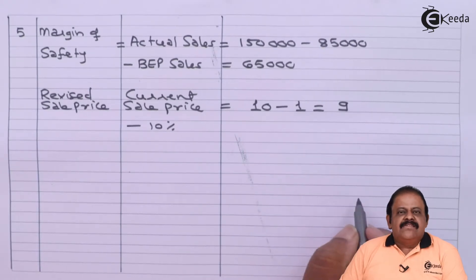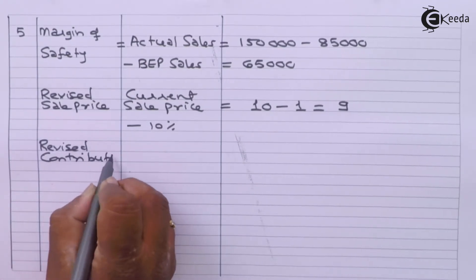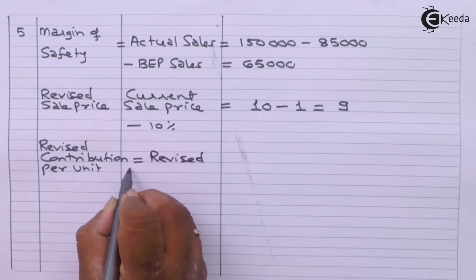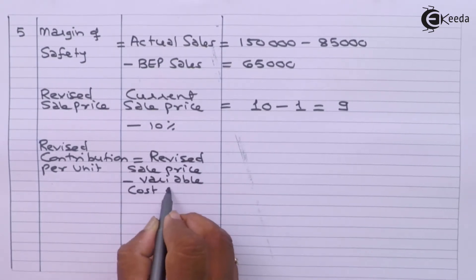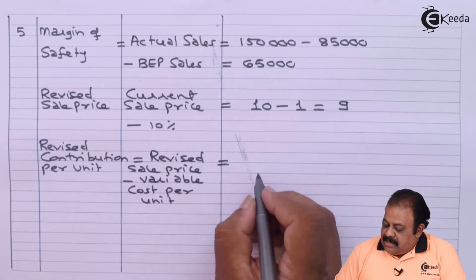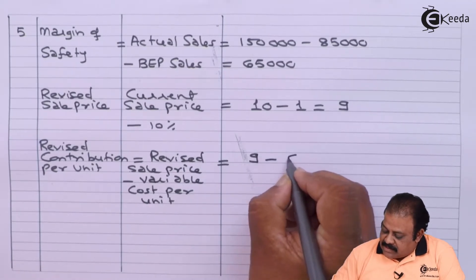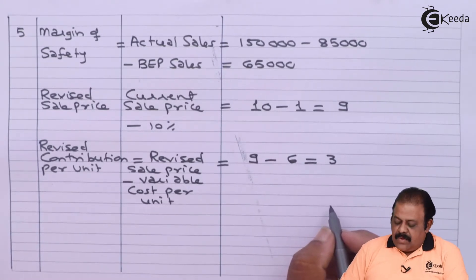After the change in sale price, there will also be a change in contribution per unit, so we calculate revised contribution per unit. Revised sale price is ₹9 and there is no change in variable cost, which remains ₹6 per unit. So revised contribution per unit is 9 minus 6 = ₹3.